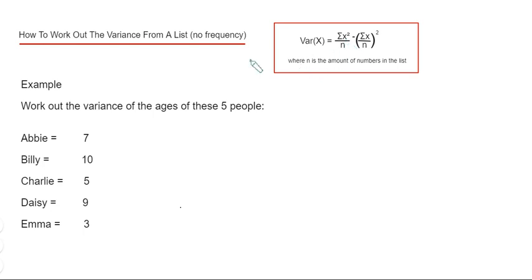So let's have a look at the example here. We've got to work out the variance of the ages of these five people. So we need to start off then by working out Σx and Σx².